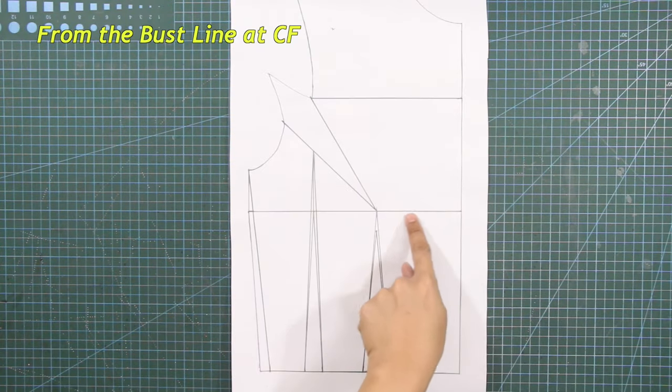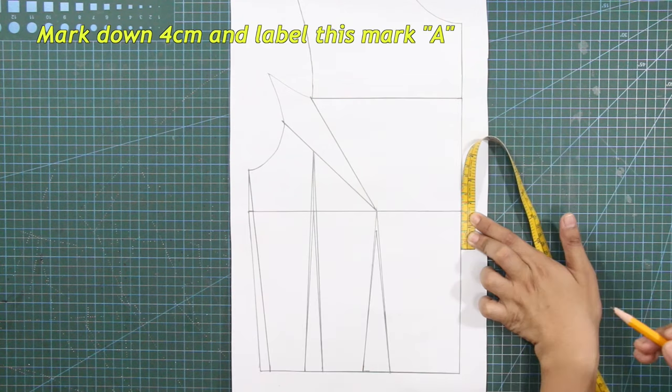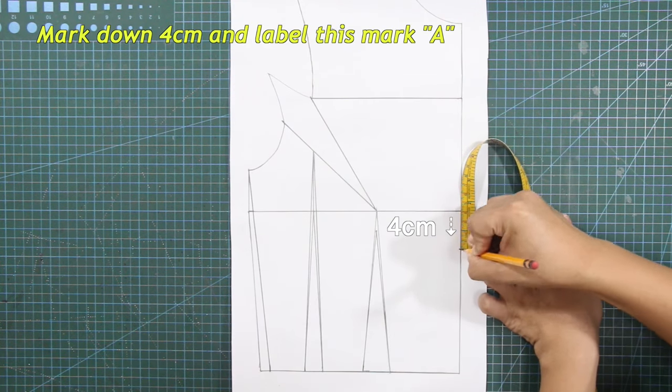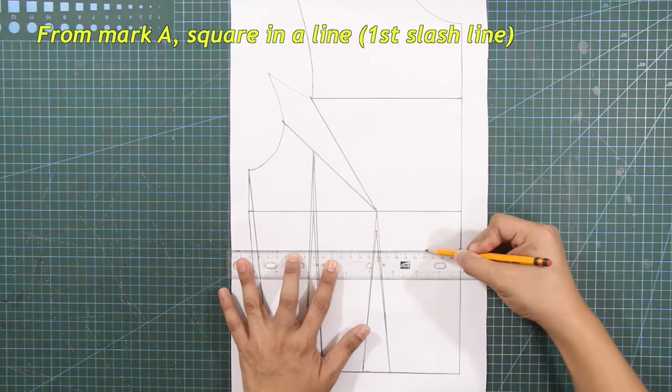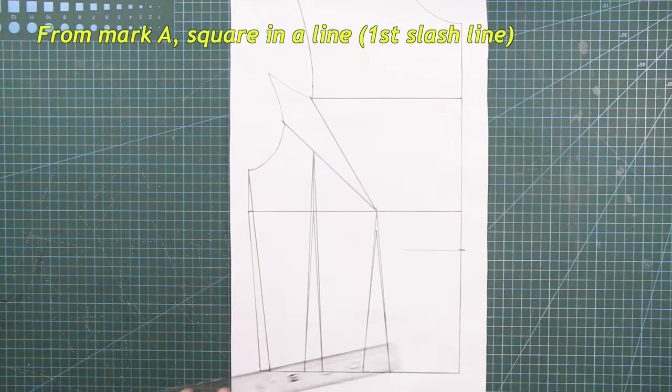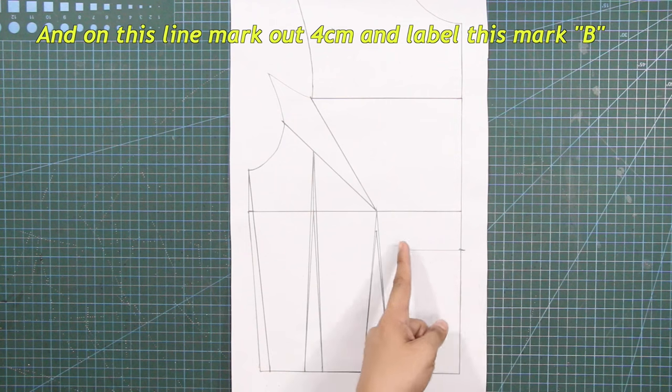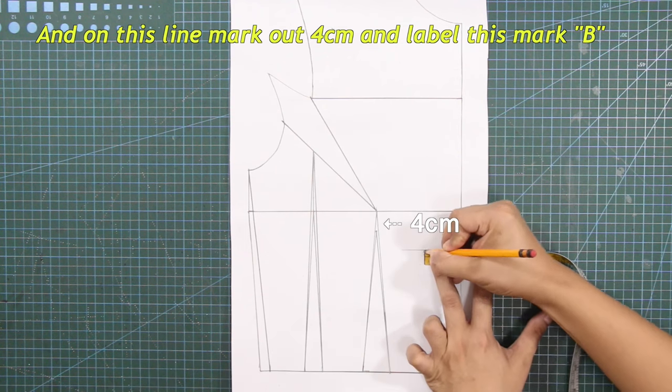From the bust line at center front, mark down 4 cm and label this mark A. From mark A, square in a line. This is the first slash line. And on this line, mark out 4 cm and label this mark B.